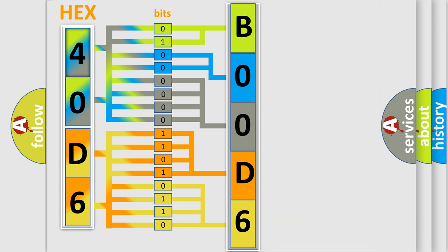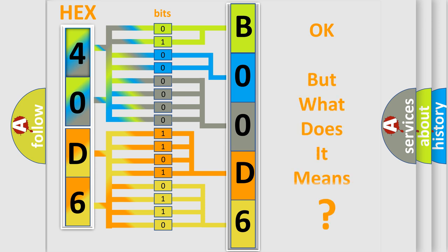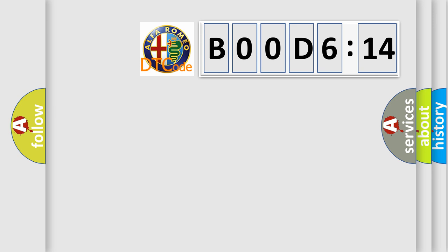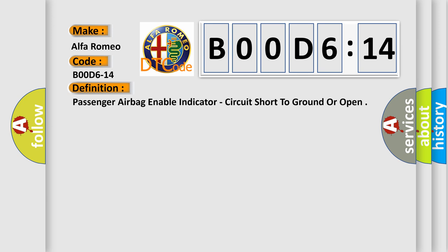We now know in what way the diagnostic tool translates the received information into a more comprehensible format. The number itself does not make sense to us if we cannot assign information about what it actually expresses. So, what does the diagnostic trouble code B00D614 interpret specifically for Alfa Romeo? The basic definition is: passenger airbag enable indicator — circuit short to ground or open.